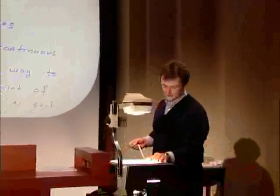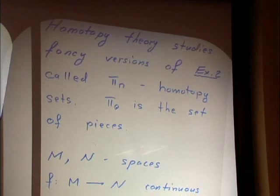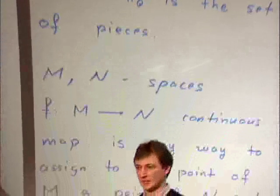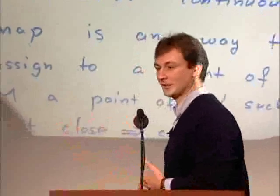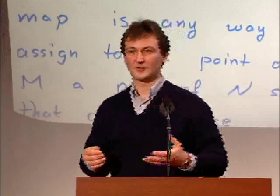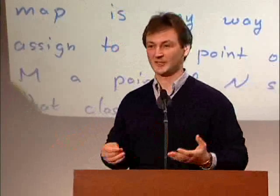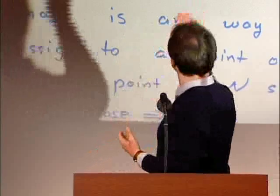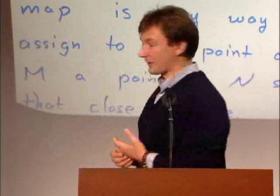So what is homotopy theory about? Let's call pi-zero of a space the set of its pieces. If a space has two pieces, then pi-zero is a set of two elements. It's typically much more finite than the space itself. What homotopy theory does is study fancy versions of this invariant, which are called higher homotopy sets. I will try to explain how one gets to these pi-n's, where pi-n will be some set for any non-negative integer n, and how one gets to pi-n from pi-zero.